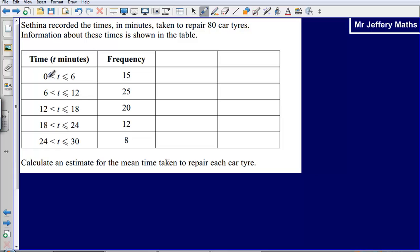What we've got here is we're told that the time is greater than 0 but less than or equal to 6. So what we could have in this category is times such as 4 minutes 38 or 5 minutes 40 and so on. We've got a range of different times in there.